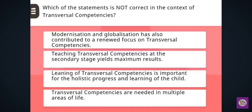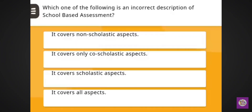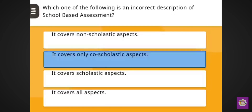Next question: Which of the statements is not correct in the context of transversal competences? Correct answer: teaching transversal competences at the secondary stage yields maximum results. Next question: Which one of the following is an incorrect description of school-based assessment? Correct answer: it covers only co-scholastic aspects.